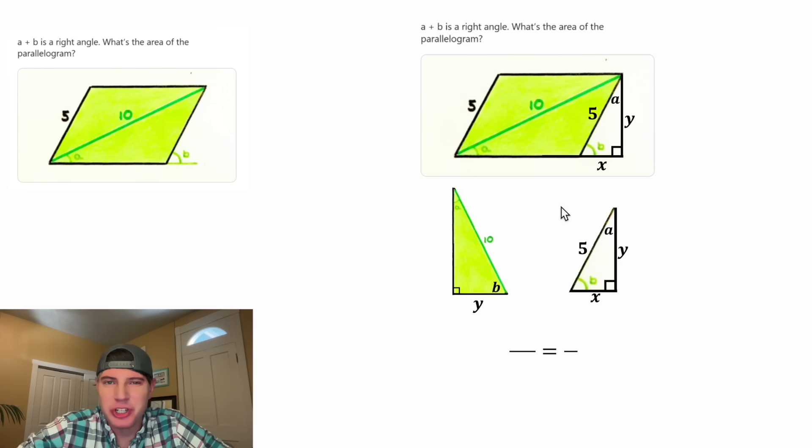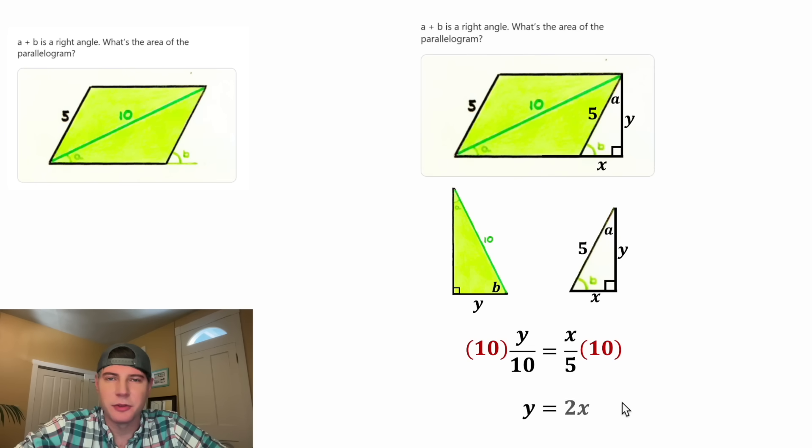And now we can set up a proportion with their corresponding sides. We can do the base over the hypotenuse equals the base over the hypotenuse. Or in other words, Y over 10 equals X over 5. From here, let's multiply both sides by 10. On the left-hand side, these 10s will cancel each other out and we're going to be left with Y. And then on the right-hand side, 10x divided by 5 is equal to 2x. So we know Y is equal to 2x.